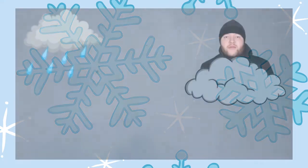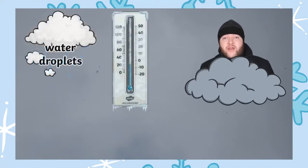He begins by explaining all about how snow is formed. When it snows, before the water droplets can fall as rain, they freeze, and when water freezes it becomes ice.